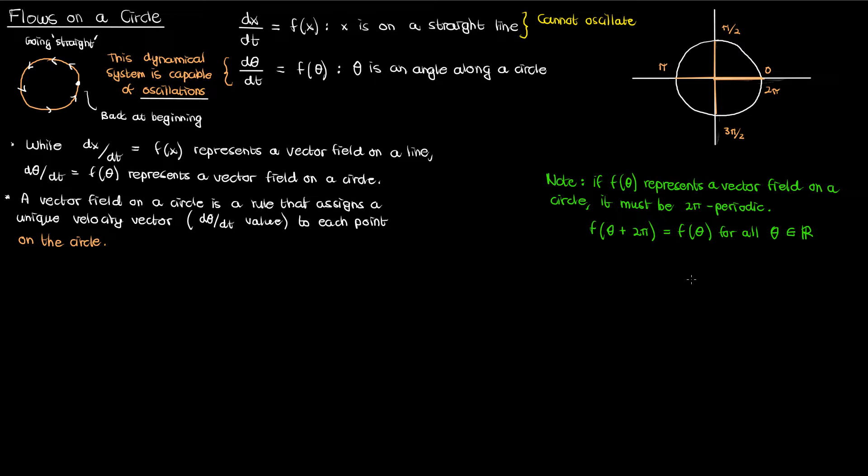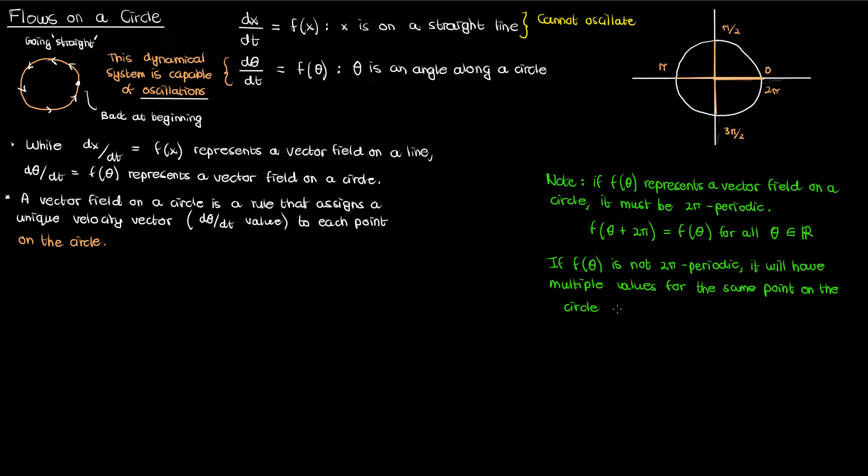So f(θ + 2π) must equal f(θ) for all real values of θ. If it's not 2π-periodic, then for a given point θ on a circle we'll get two values for f(θ), because this point corresponds not only to θ but also to θ + 2π, which represents a revolution on the circle relative to θ. Because we'd get two different velocities applied to the same point, that's simply not a valid vector field.